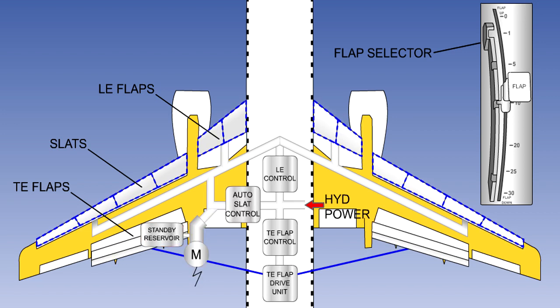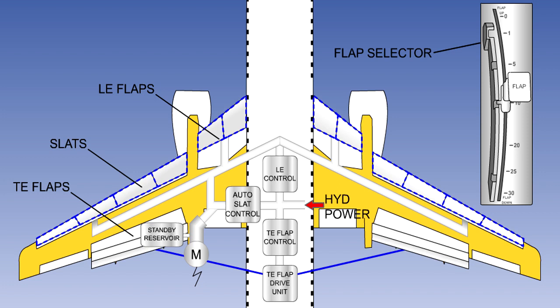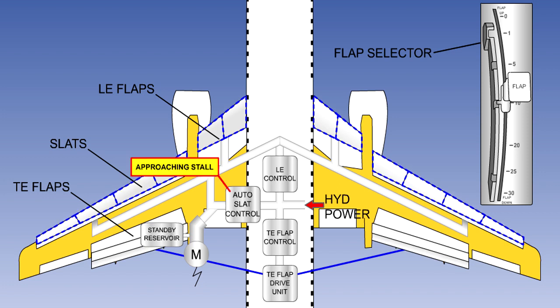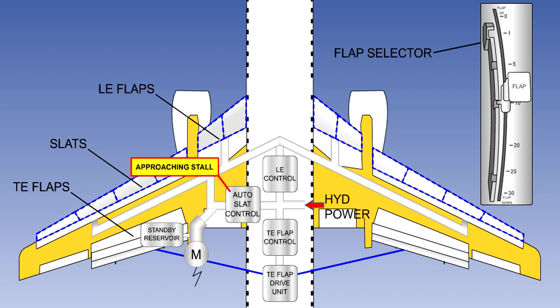Some aircraft types have an auto slat system, which will automatically extend the slats from the intermediate position to the fully extended position if the aircraft approaches the stall angle of attack and the slats are not already fully extended.